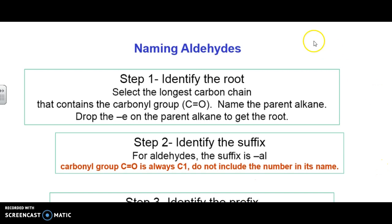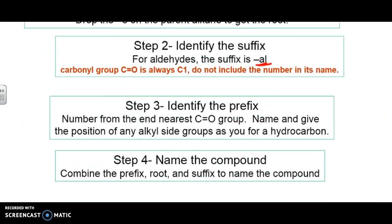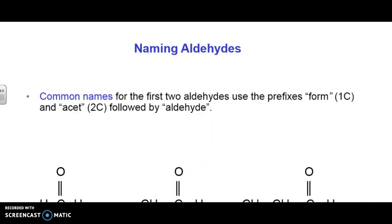When you have an aldehyde, the ending by definition becomes al. We don't need to include numbers on this because it always has to have an oxygen attached to a hydrogen, so we know it has to be on the end of the carbon chain. Therefore, we don't have to identify it because it's always at spot one.